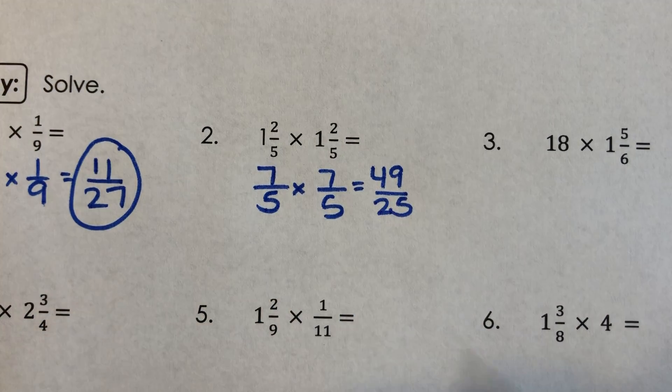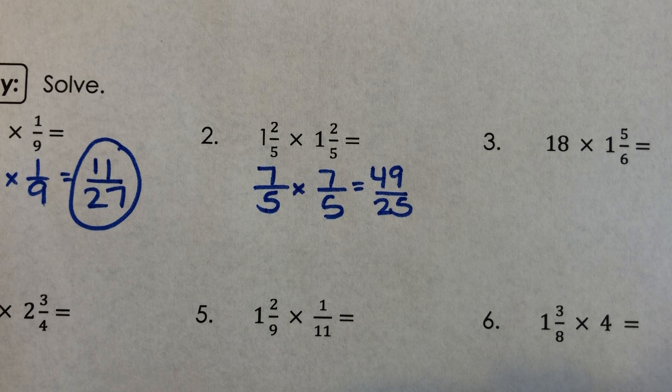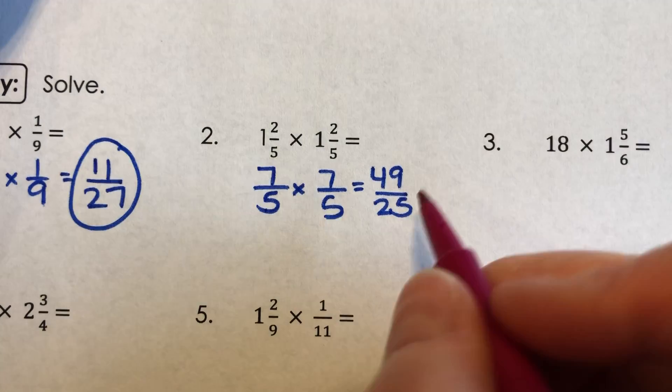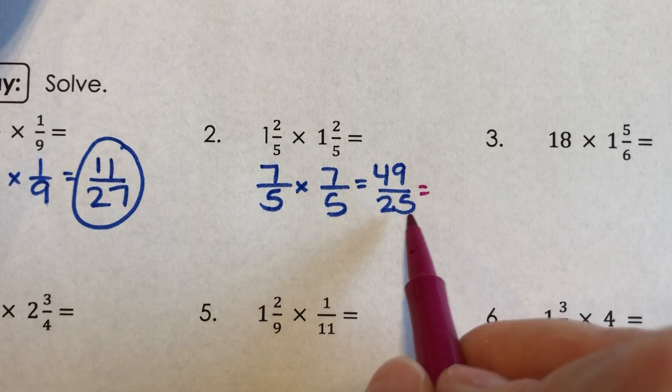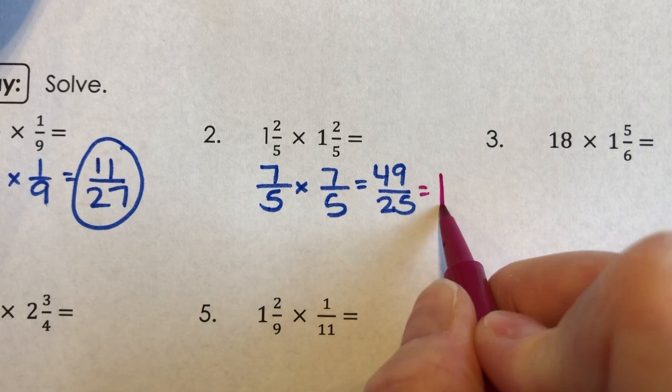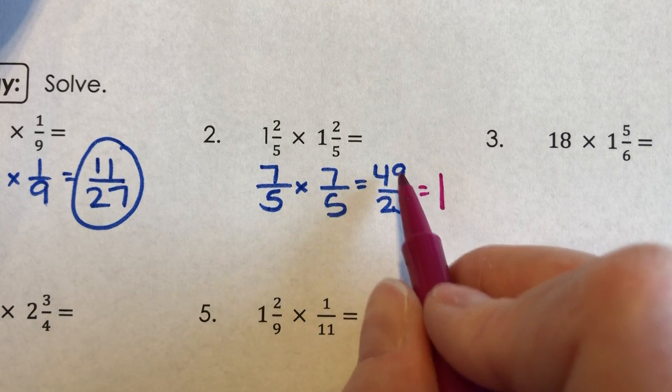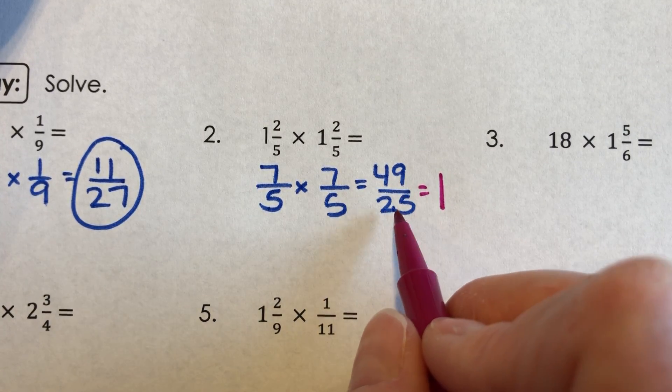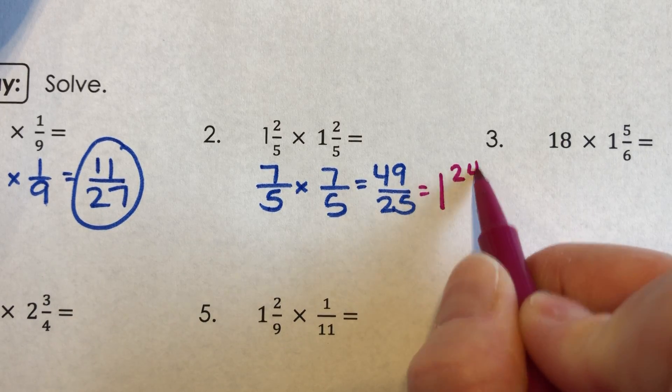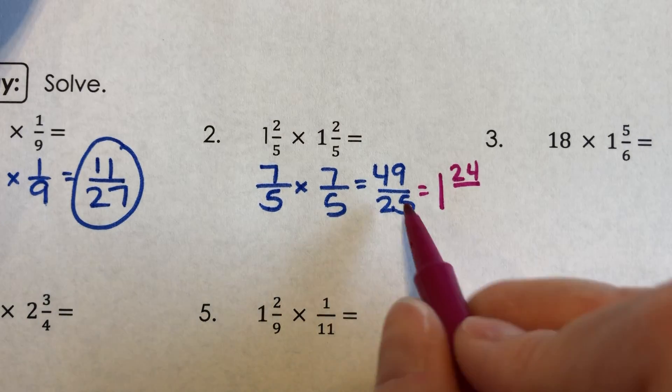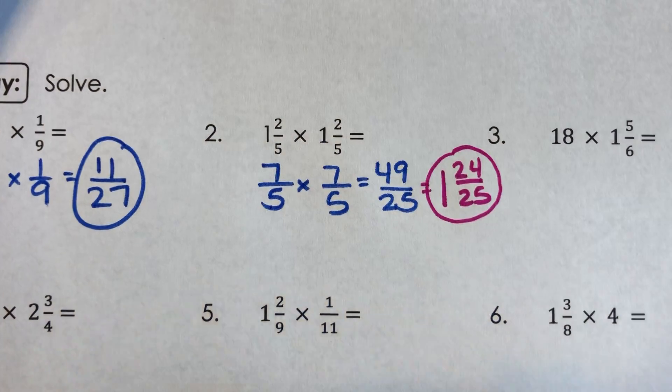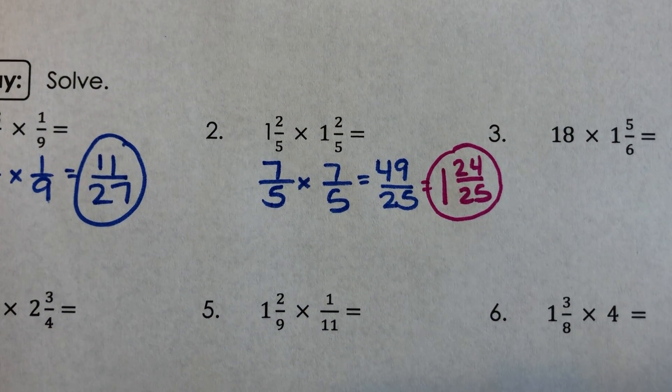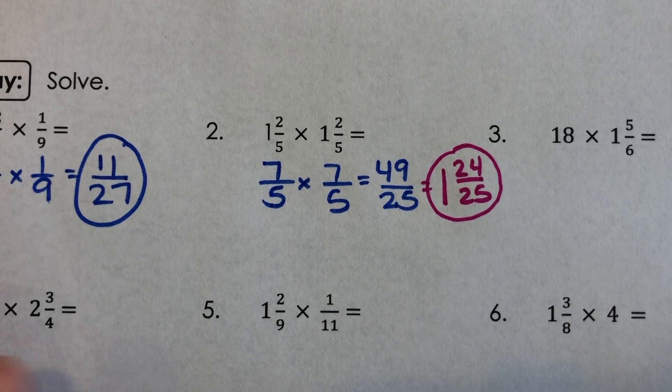Now this one, that's improper. I do want my answers to be in simplest form and written as a mixed number. So I know that 25 plus 25 is 50. And I can't quite fit two 25s into 49. I can fit one. And if I know that 25 plus 25 is 50, then that would mean 25 plus 24 is 49. My denominator doesn't change. So your final answer for number two should be 1 and 24/25.